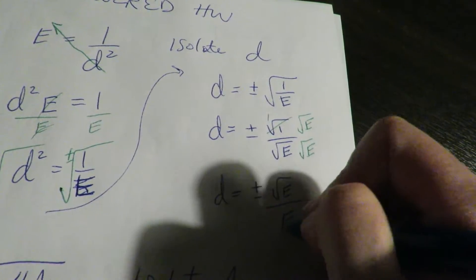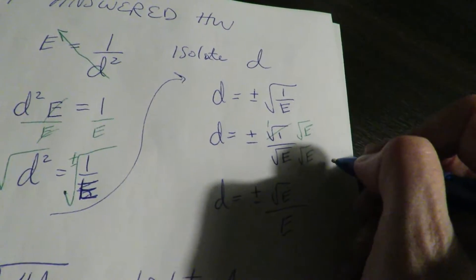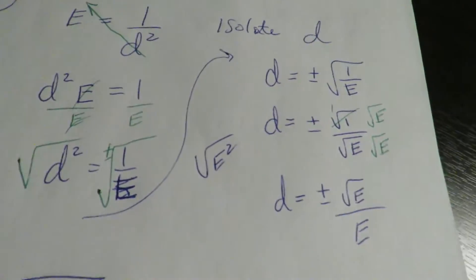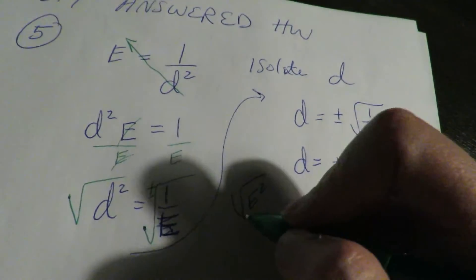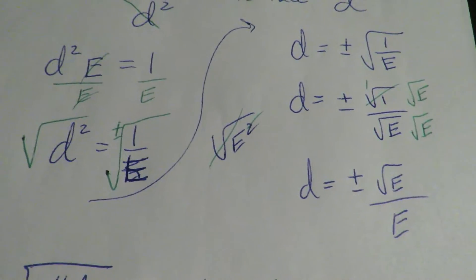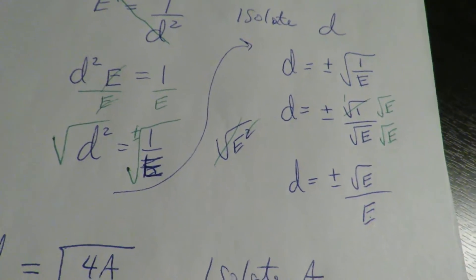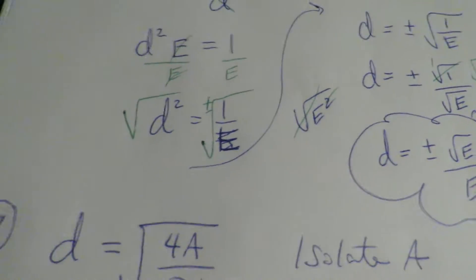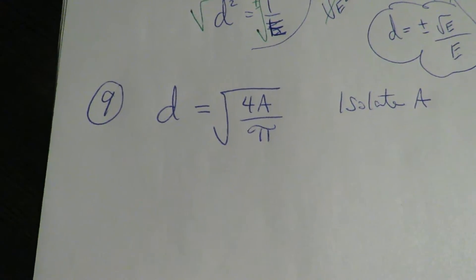Again, this is e squared underneath. If you want me to write a little step somewhere I can. Underneath it becomes e squared when you do e times e, but then the square root and the square undo each other, and then the e comes out. Okay, let's try this one. Here we want to isolate a, so we want to get rid of the radical.